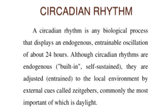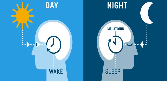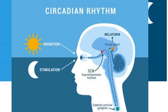they are adjusted and trained to the local environment by external cues called Zeitgebers, the most important of which is daylight. We are awake because our internal clock responds to sunlight, and we are asleep when our internal clock responds to darkness, and there is secretion of melatonin.